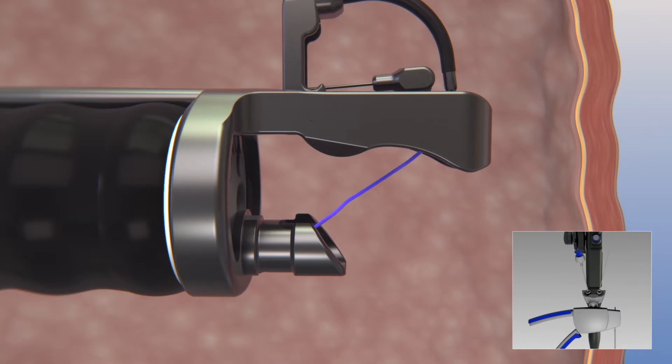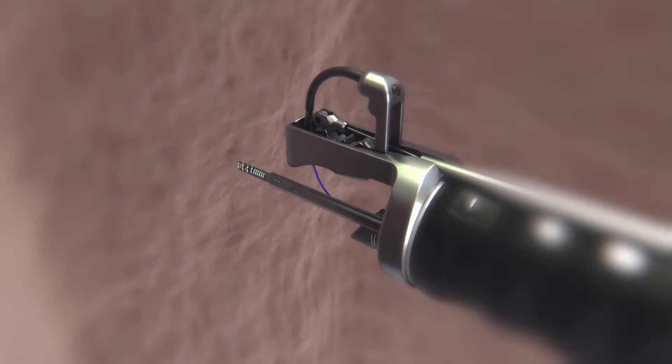Advance the tissue helix through the 2.8 mm scope channel. Push the blue cross button to expose the helix. Advance the helix to target the appropriate tissue. Using forward pressure, turn the tissue helix knob in the clockwise direction to capture tissue.